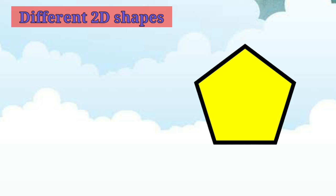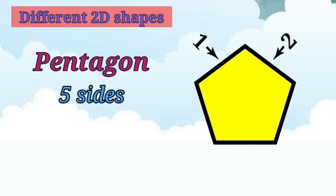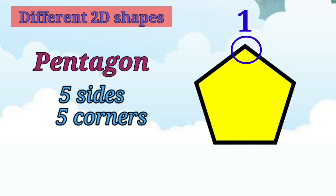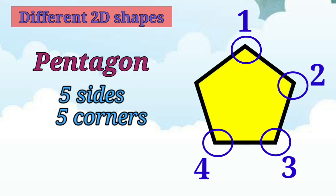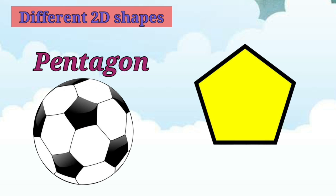Children, what shape is this? It is a pentagon. A pentagon has 5 sides — 1, 2, 3, 4, 5 — and 5 corners — 1, 2, 3, 4, 5. For example, in a football, the black shaded part has a pentagon shape.